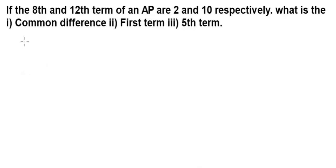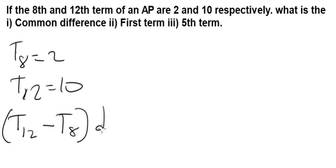Let's solve this problem. In this question we have T8 to be 2, we have T12 to be 10. To solve this problem, the trick will be you do T12 minus T8 times the common difference, which is unknown.